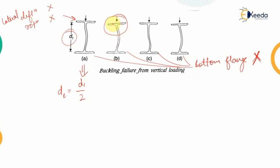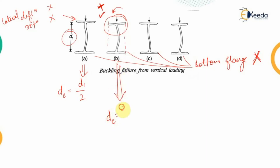These are codal provisions according to Indian Standard Code IS 800:2007 edition. In the third condition, rotation of the top flange is not allowed but lateral deflection is allowed — this resembles a pinned or hinge connection. For this case, the effective depth is taken as equal to D1. In the fourth condition, both rotation and deflection are allowed, meaning the top flange is completely free. Here the effective depth is taken as 2 times D1.